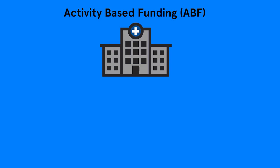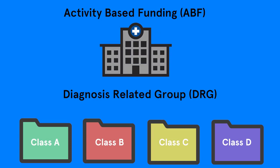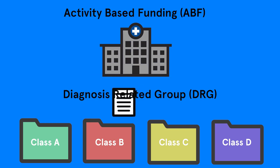The activity-based funding system ensures that admitted patient hospital data is grouped into diagnosis-related groups or DRG classes. DRG classes provide meaningful ways of linking hospital resources to patients and enable healthcare performances to be measured and compared. This allows the government to provide funding according to the number, mix and complexity of patients.